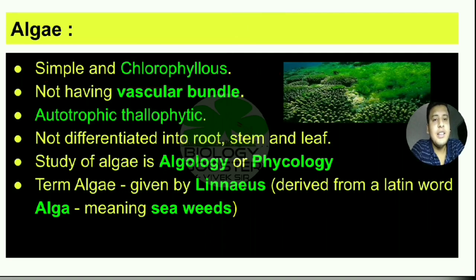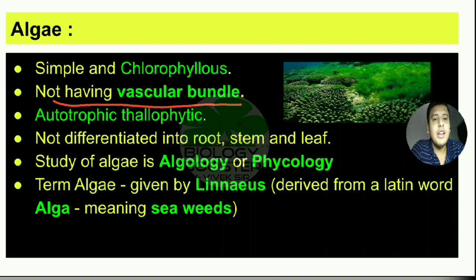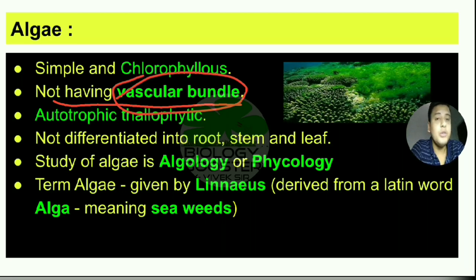Algae do not have vascular bundles — it means algae are lacking vascular bundles. Vascular bundles are of two types: xylem and phloem. In algae, the vascular bundle is absent, which means the transportation of water, minerals, and food material is not done by xylem and phloem.